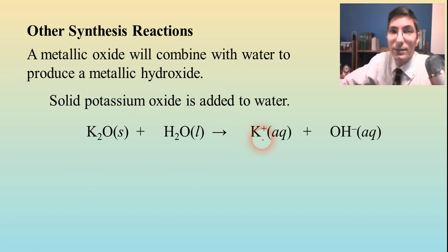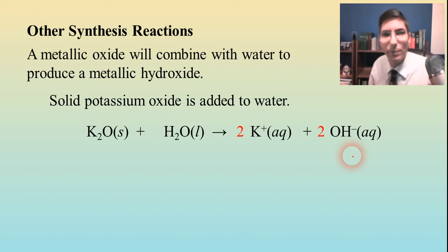Since it's in solution with water present, we need to write it in its ion form: K+ and OH-. For those group one and two hydroxides, they break apart because those are strong bases. Make sure this is balanced, and it looks like it's not. I'm going to balance it, put a two here and another one there. Now the equation is balanced. That's one type of reaction: metallic oxides combined with water to make metallic hydroxides.